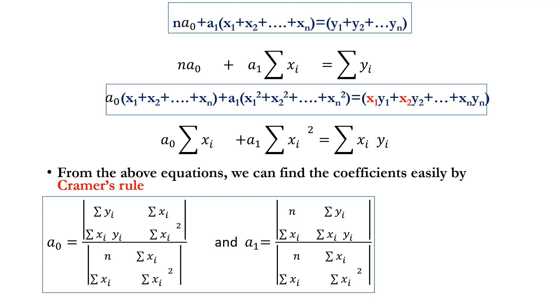From the above two equations we can find the coefficients by Cramer's rule. a₀ can be written as like this, and a₁ can be calculated like this.